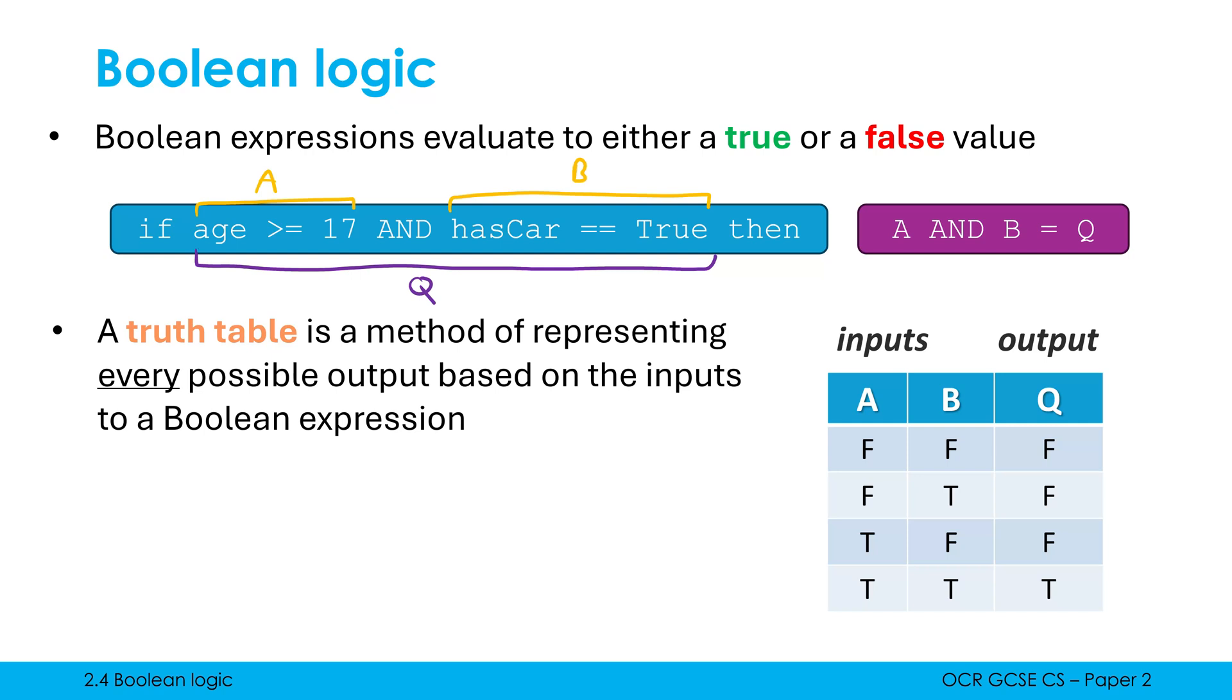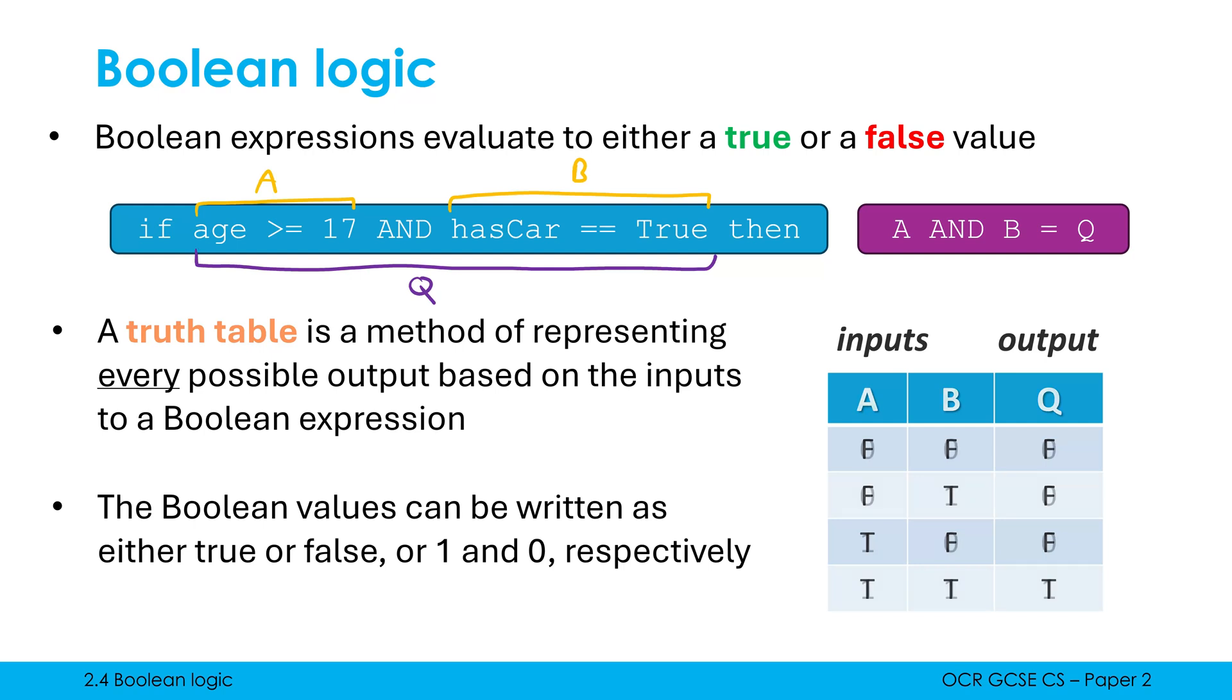Now this truth table is using F for false and T for true. However, a lot of the time, in fact most of the time, we use one and zero instead, with one being for true and zero being for false. They are equivalent. You'll generally see binary being used. And that's partly why we use Boolean values is that it connects really easily to binary. It's really simple. We can use what we have already to represent these different values.